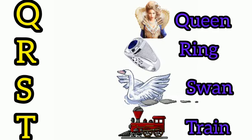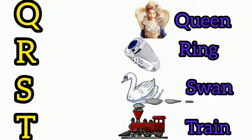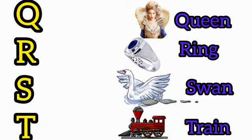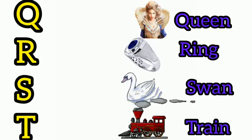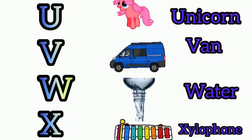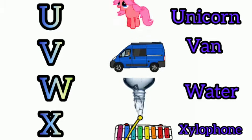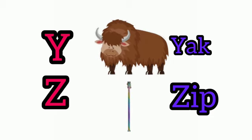R for ring, S for swan, T for train, U for unicorn, V for van, W for water, X for xylophone, Y for yak, Z for zebra.